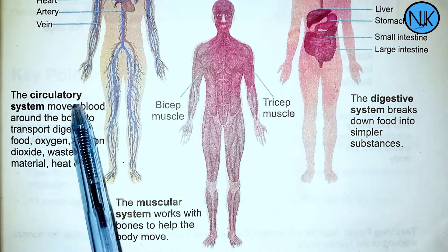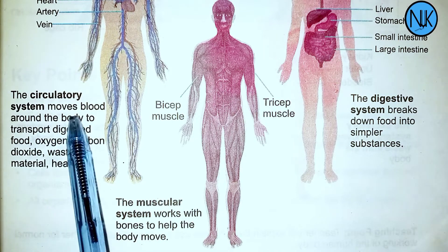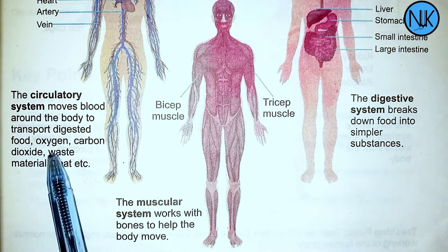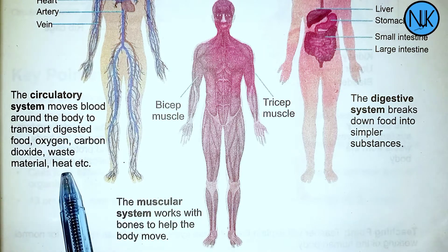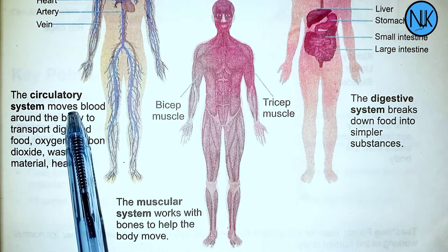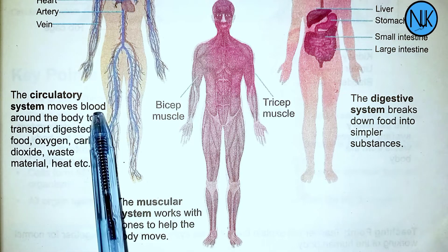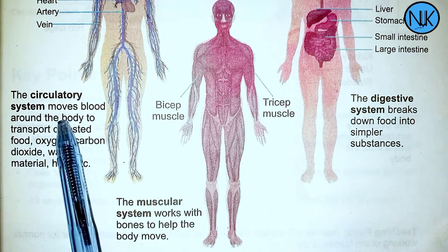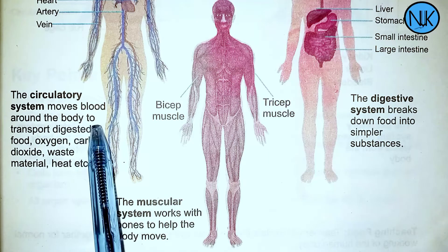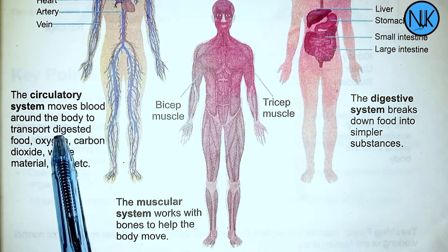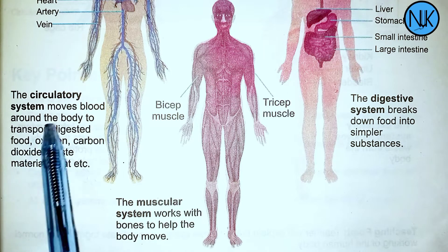The circulatory system moves blood around the body to transport digested food, oxygen, carbon dioxide, waste material, heat, and more.